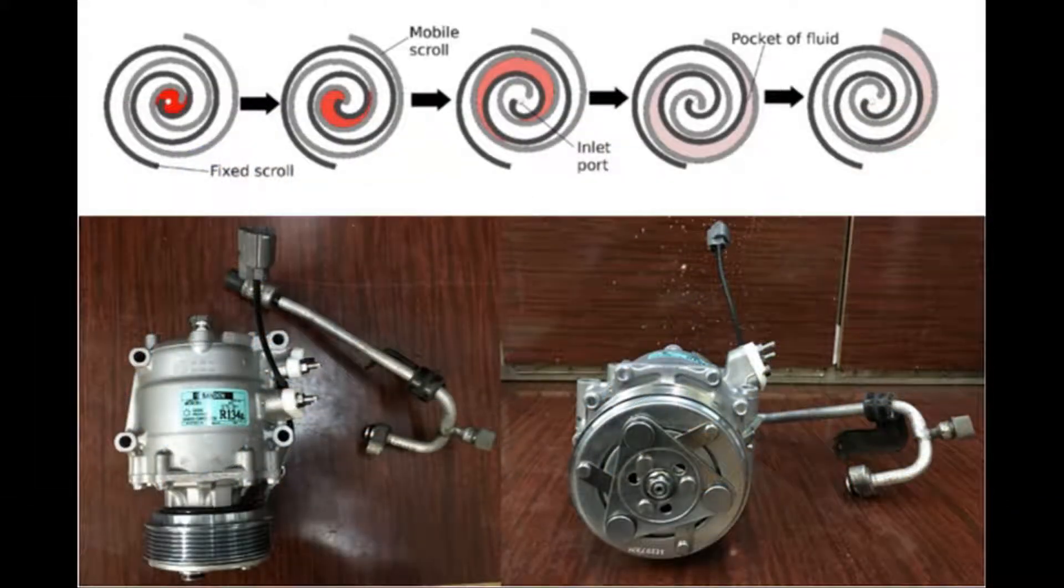This picture shows the principle of the scroll expander. A scroll set is made of two identical scrolls. One is the stationary scroll, while the other is the orbiting scroll. One scroll is inverted and rotated 180 degrees to intermesh with the opposite scroll.